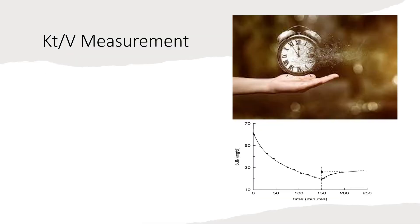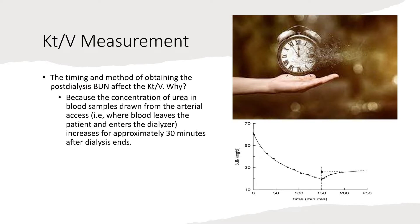In order to accurately calculate Kt/V, you have to measure the post-dialysis BUN correctly. This is actually harder to do than we think because the timing of the blood draw is very important. The concentration of urea in blood samples drawn from the arterial access — where the blood leaves the patient and enters the dialyzer — increases for approximately 30 minutes after dialysis ends. If you check the BUN right at the end of dialysis, or five, ten, or twenty minutes later, you're going to get a different value, and that's going to affect your Kt/V.